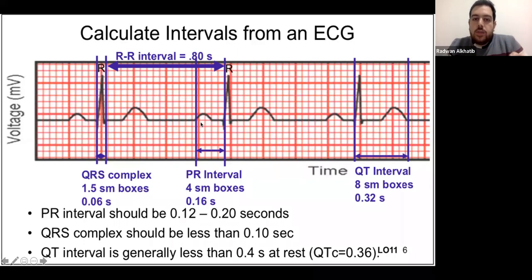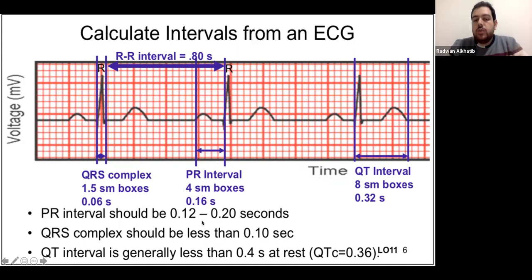A common pitfall: the PR interval goes from the start of the P wave all the way to the beginning of the R wave — not just to the end of the P wave. It should be three to five small boxes or 0.12 to 0.2 seconds. If prolonged, we call that a first degree heart block.